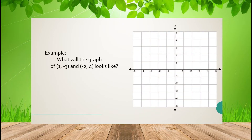Another example: what will the graph of (1, -3) and (-2, 4) look like? Graph (1, -3) and then (-2, 4), and connect the two points. By given two points, you can form a line.